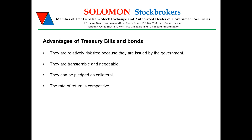After looking at the fundamentals of government bonds, let's look at the advantages. First, they are relatively risk-free because they are issued by the government. It is believed that the government cannot default on its obligations because, in case it doesn't have funds, it can always issue new bonds, print new money, or ask for financial assistance from partner countries. They are also transferable and negotiable. Most investors are afraid to invest in long-term bonds because they believe they'll have to hold the bond to maturity — but this is not the case. Government bonds are tradable in the secondary market, and the investor may decide to sell part or all of the bond if he wishes.